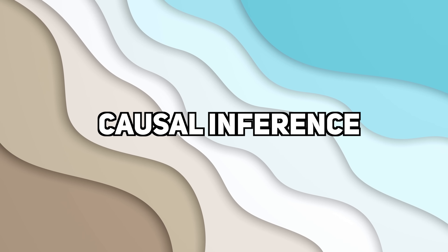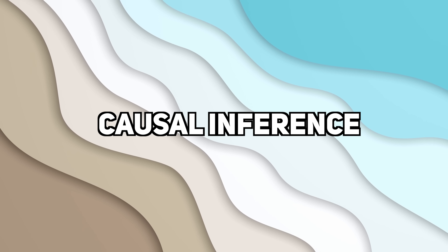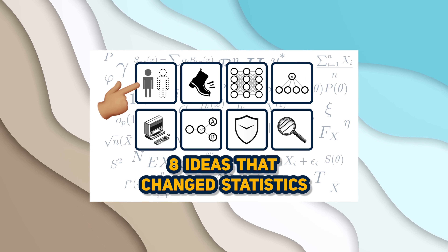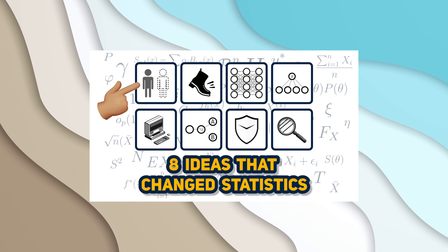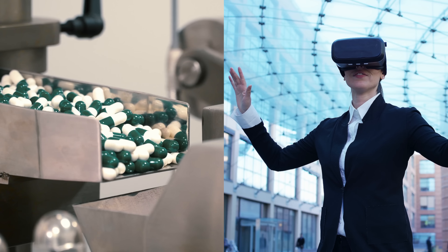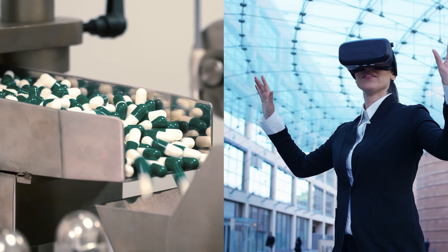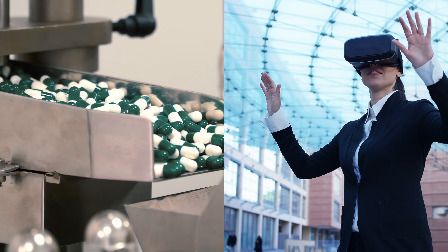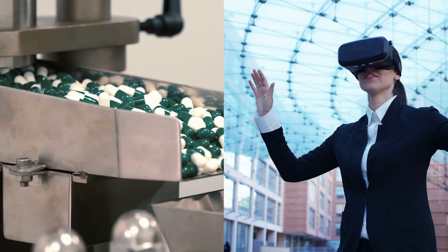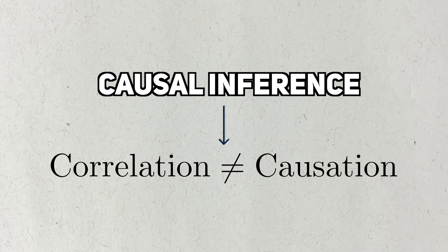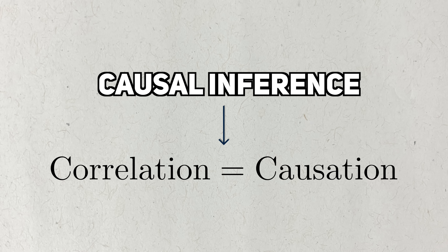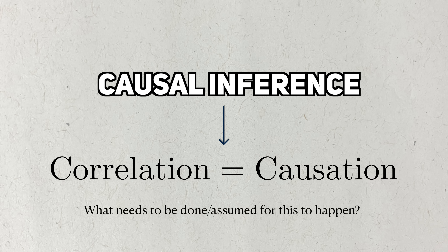Causal inference. If you've been with this channel for a while, you might recognize that causal inference was named one of the most influential ideas in statistics in the past 50 years. And for good reason. Both pharma companies and tech companies have a massive interest in distinguishing between causes and correlations. The aim of causal inference is to take the idea that correlation does not equal causation and figure out when they are equal, and what needs to be done or assumed to make them equal. But as we'll see, this is no easy task.